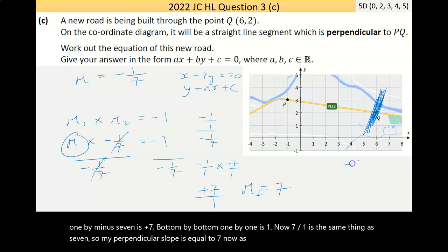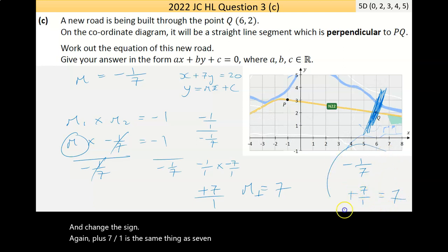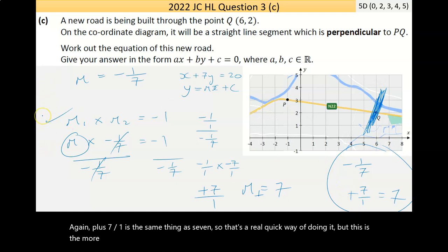A simpler way of doing that, to find the perpendicular slope, you turn it upside down and change the sign. Plus 7 over 1 is the same thing as 7. That's a real quick way of doing it, but this is the more mathematical way. There's no right or wrong, whatever you prefer.